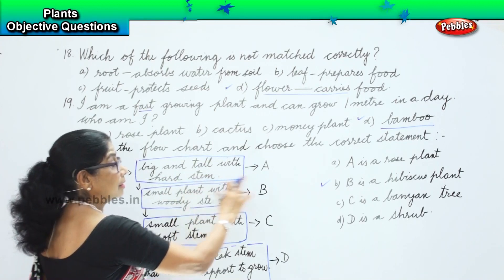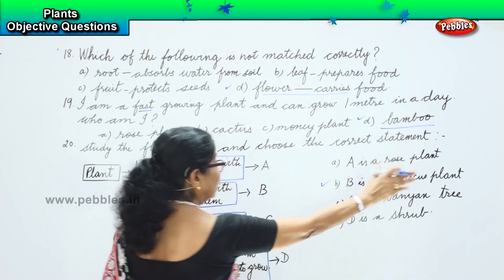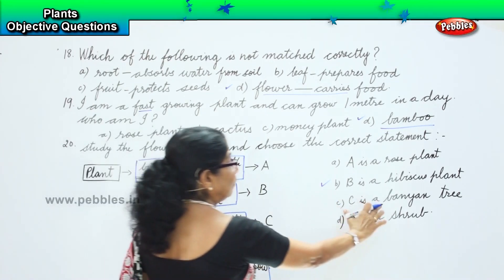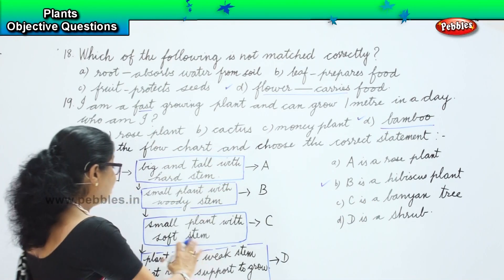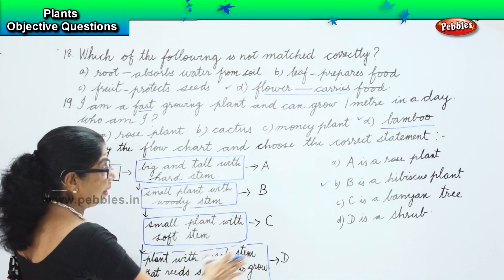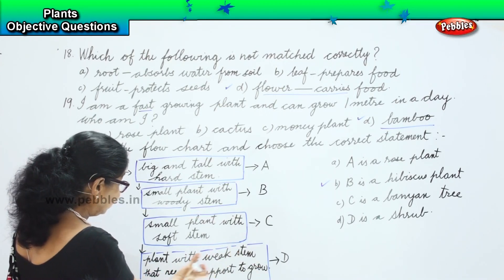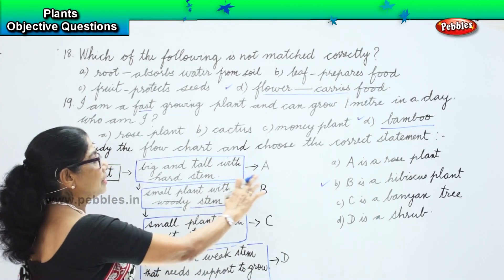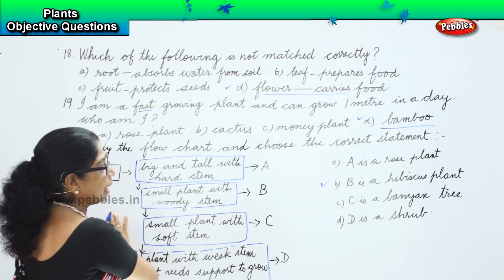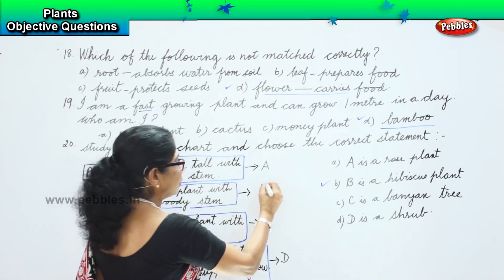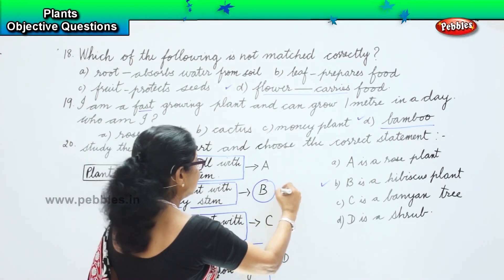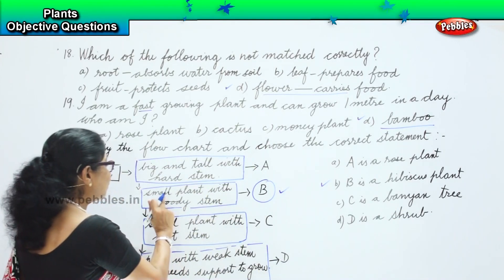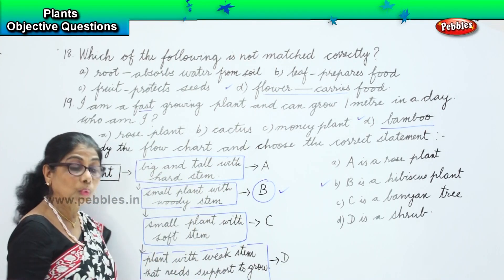Big and tall with hard stem — rose is not big and tall with hard stem. Small plant with soft stem — banyan definitely does not have a soft stem. And the last one is a shrub, but the statement says it's a weak plant that needs support to grow. So the correct statement is B. B is correct because it is a hibiscus plant — hibiscus is a small plant with a woody stem.